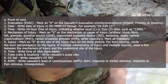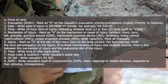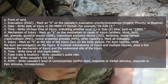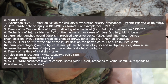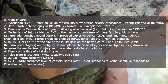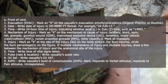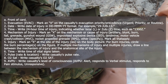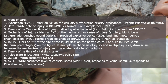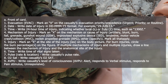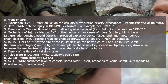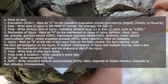Record the time: write the 24-hour time of the injury, indicating whether local or Zulu time, such as 1300 Zulu. Annotate the mechanism of injury by marking an X on the mechanism or cause of injury — for this instance, it's a gunshot wound. Mark an X at the site of injury on the body diagram. For burn injuries, circle the burn percentages on the figure. If there are multiple mechanisms of injury and multiple injuries, draw a line between the mechanism of injury and the site of injury.